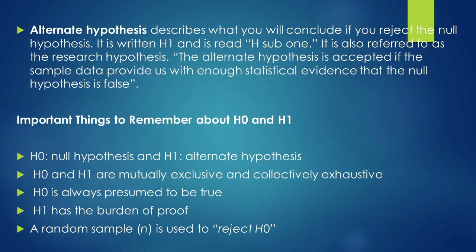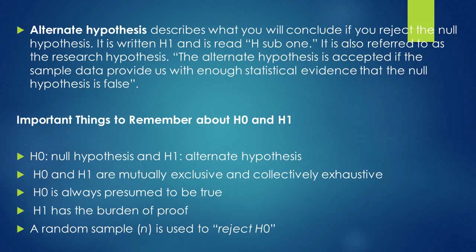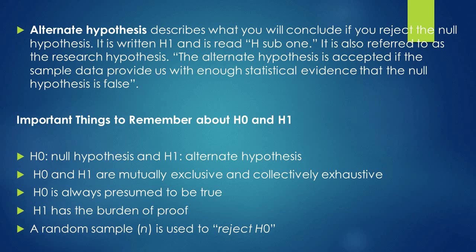The alternative hypothesis describes what you will conclude if you reject the null hypothesis. If we reject the null hypothesis, we automatically accept the alternative hypothesis. It is written H1, read as H-sub-one, and is also referred to as the research hypothesis. The alternative hypothesis is accepted if sample data provide enough statistical evidence that the null hypothesis is false.